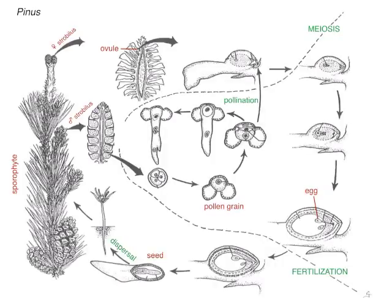Hello students, this is Non-Flaring Plants, and today we're going to go over the pine life cycle. The pine life cycle is different from the cycad life cycle because it has siphonogamy, which means sex through a tube. There are no swimming sperm in the pine life cycle.